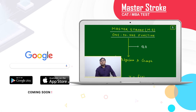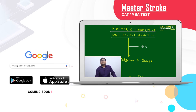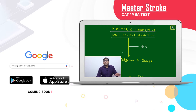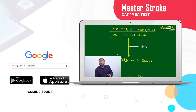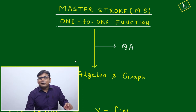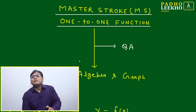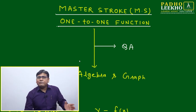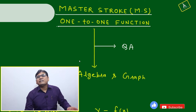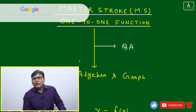Welcome to the Master's Talk. In this Master's Talk, I am going to discuss about one-to-one functions. One-to-one function is a type of function that falls under the category of relation. A function is a type of relation where for every output, a certain input should be there.